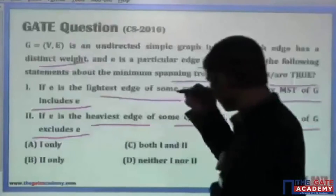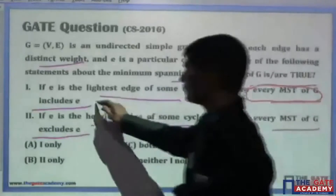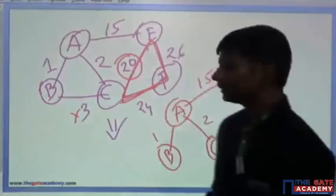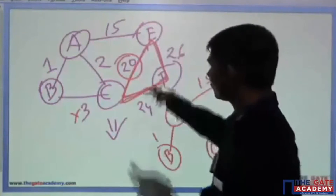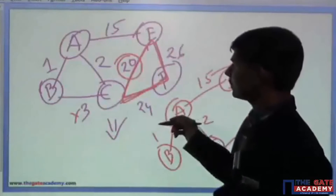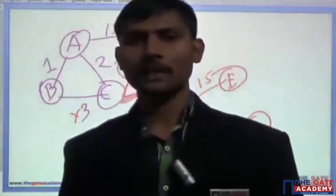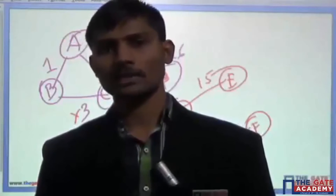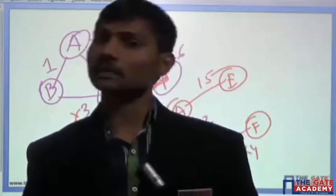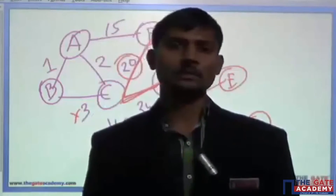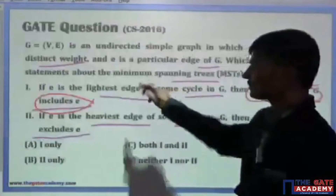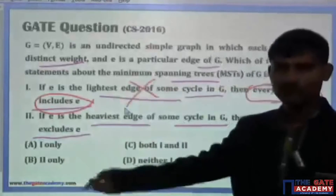The statement says that if E is the lightest edge in some cycle in G, then every minimum spanning tree of G includes E — which is clearly a wrong statement. It is not necessary that the edge will be included in every minimum spanning tree. When we find the MST, we select the smallest weight edge, but we also ensure that the edge we pick does not form any cycle. If it forms a cycle, we throw it out and select the next edge with more weight. So saying the edge with the smallest weight in some cycle will always be selected is clearly wrong, and the counter-example has been shown.